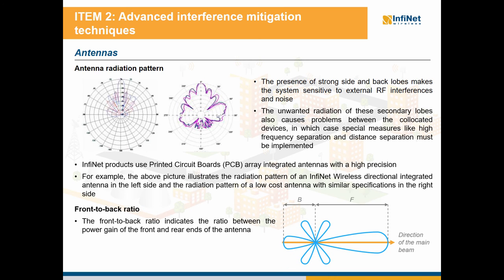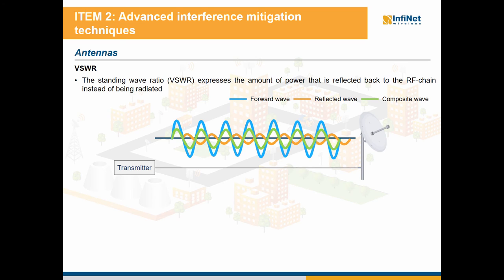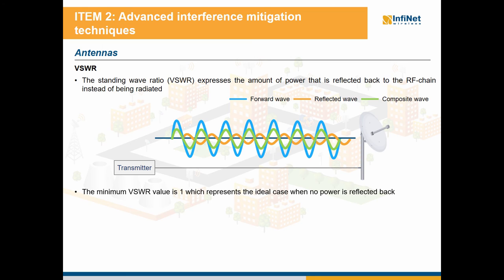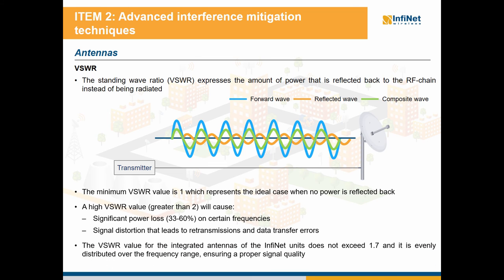The front-to-back ratio indicates the ratio between the power gain of the front and rear end of the antenna. Infinite Wireless integrated antennas feature high front-to-back ratio, minimum 20 dB, reducing interferences in case of collocated devices. Another important characteristic is the VSWR, which expresses the amount of power that is reflected back to the RF chain instead of being radiated. The minimum VSWR value is 1, which represents the ideal case when no power is reflected back. A high VSWR value, usually greater than 2, will cause significant power loss on certain frequencies and signal distortion that leads to retransmissions and data transfer errors. The VSWR value for the Infinite units does not exceed 1.7 and it is evenly distributed over the frequency range, ensuring a proper signal quality.